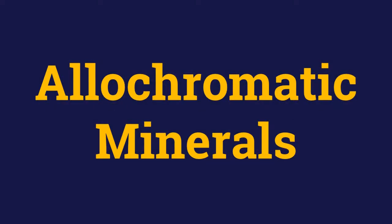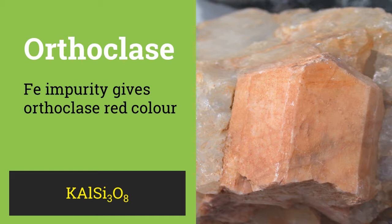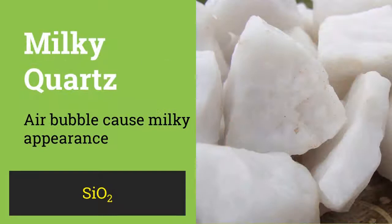So far, we discussed idiochromatic minerals. Now let us explore allochromatic minerals in which the coloring agent is not a major constituent but rather an impurity. Orthoclase feldspar is an allochromatic mineral since the red color is caused by iron, but iron is not a constituent element of orthoclase but is rather an impurity. The milky appearance of milky quartz is due to the presence of air bubbles in its silicate structure. Since this color does not come from its constituent particles, that is SiO₂, it is an allochromatic mineral.